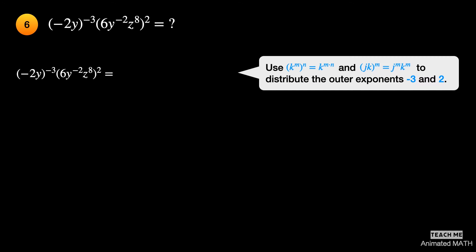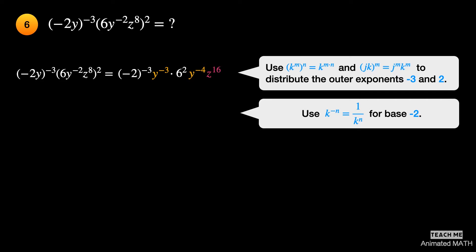Use the seventh and eighth properties to distribute the exponents negative 3 and positive 2 to the terms inside the parentheses. The exponent of negative 2 is negative 3. The exponent of y is negative 3. The exponent of 6 is 2. The new exponent of y is negative 2 times 2, or negative 4. The new exponent of z is 8 times 2, or 16.